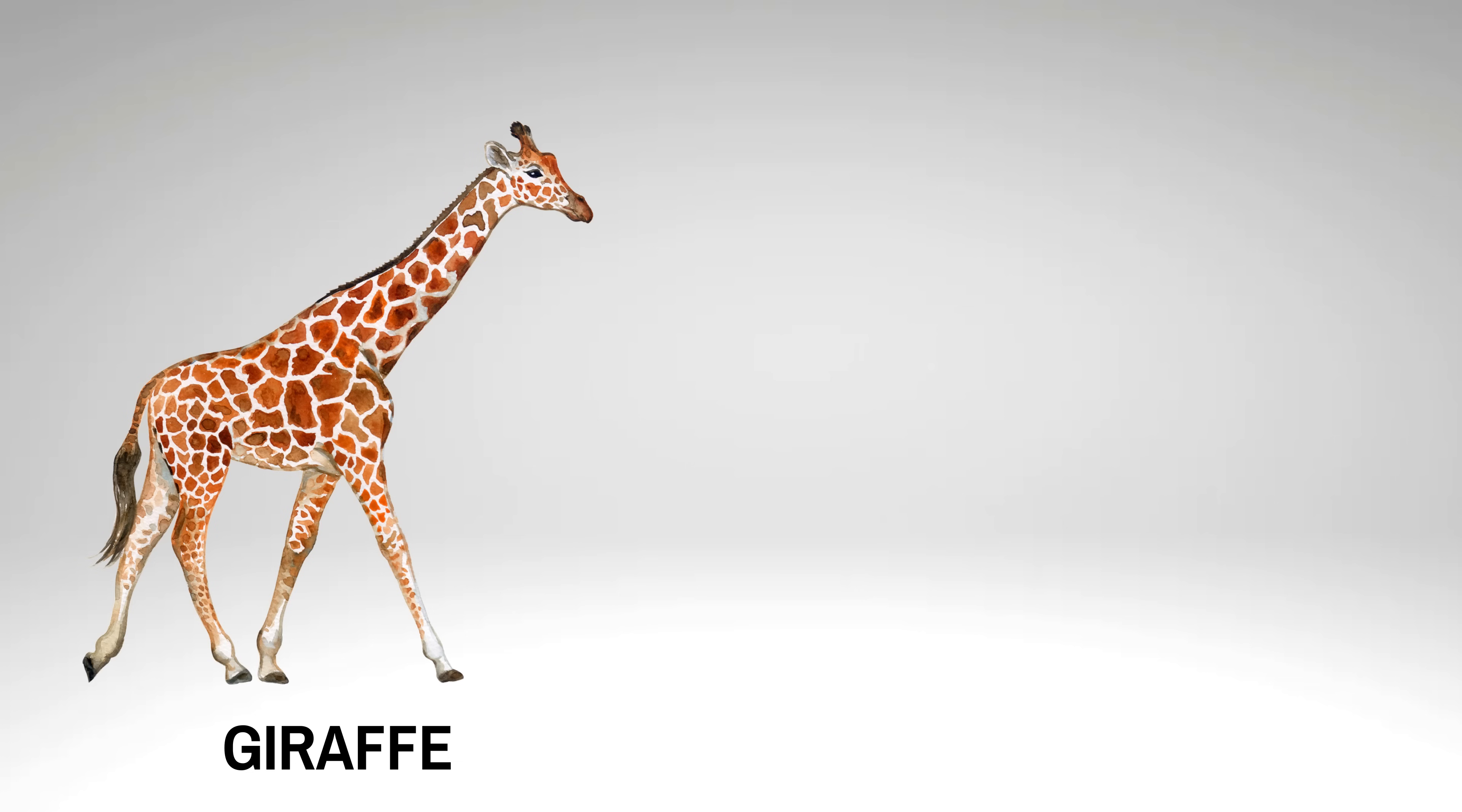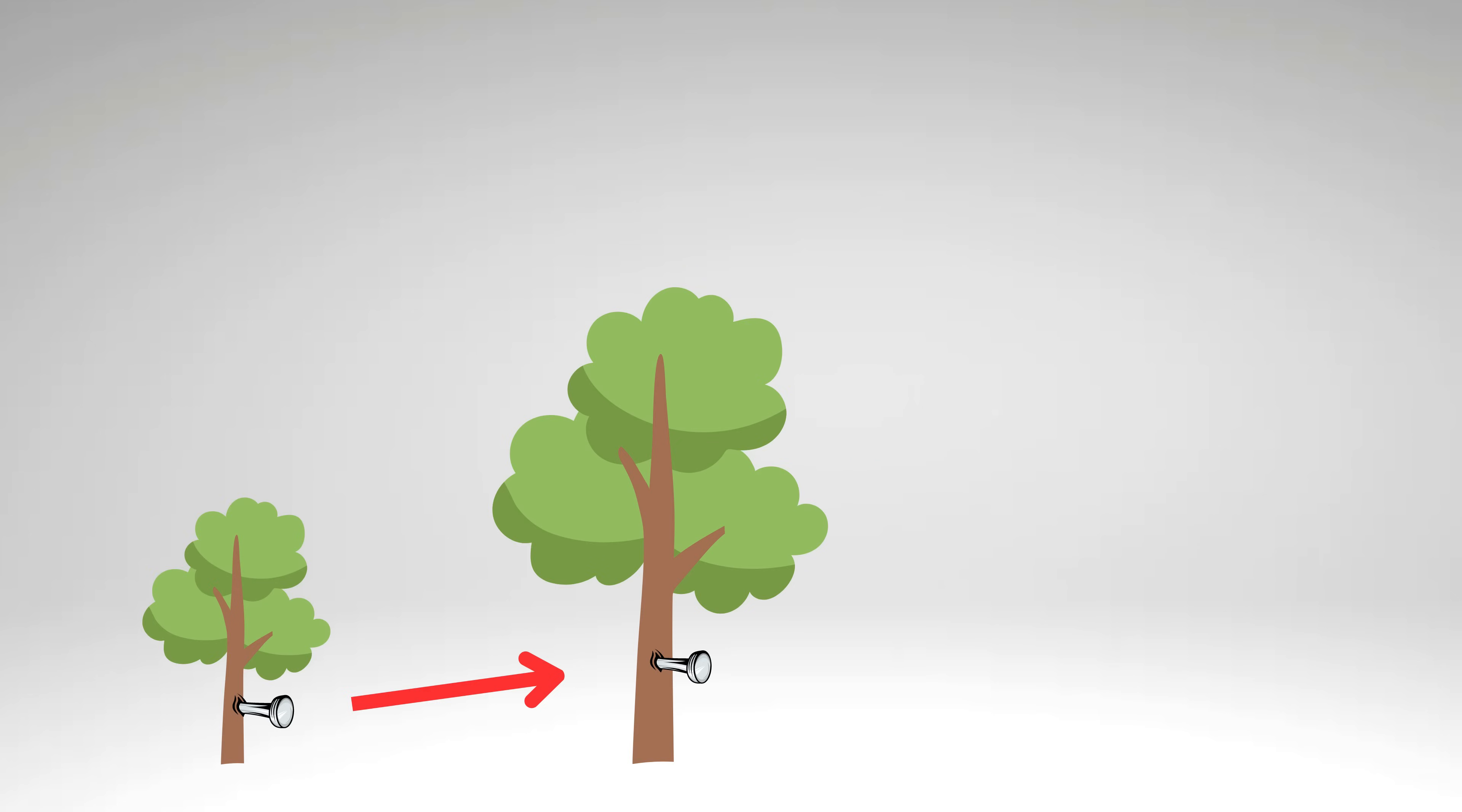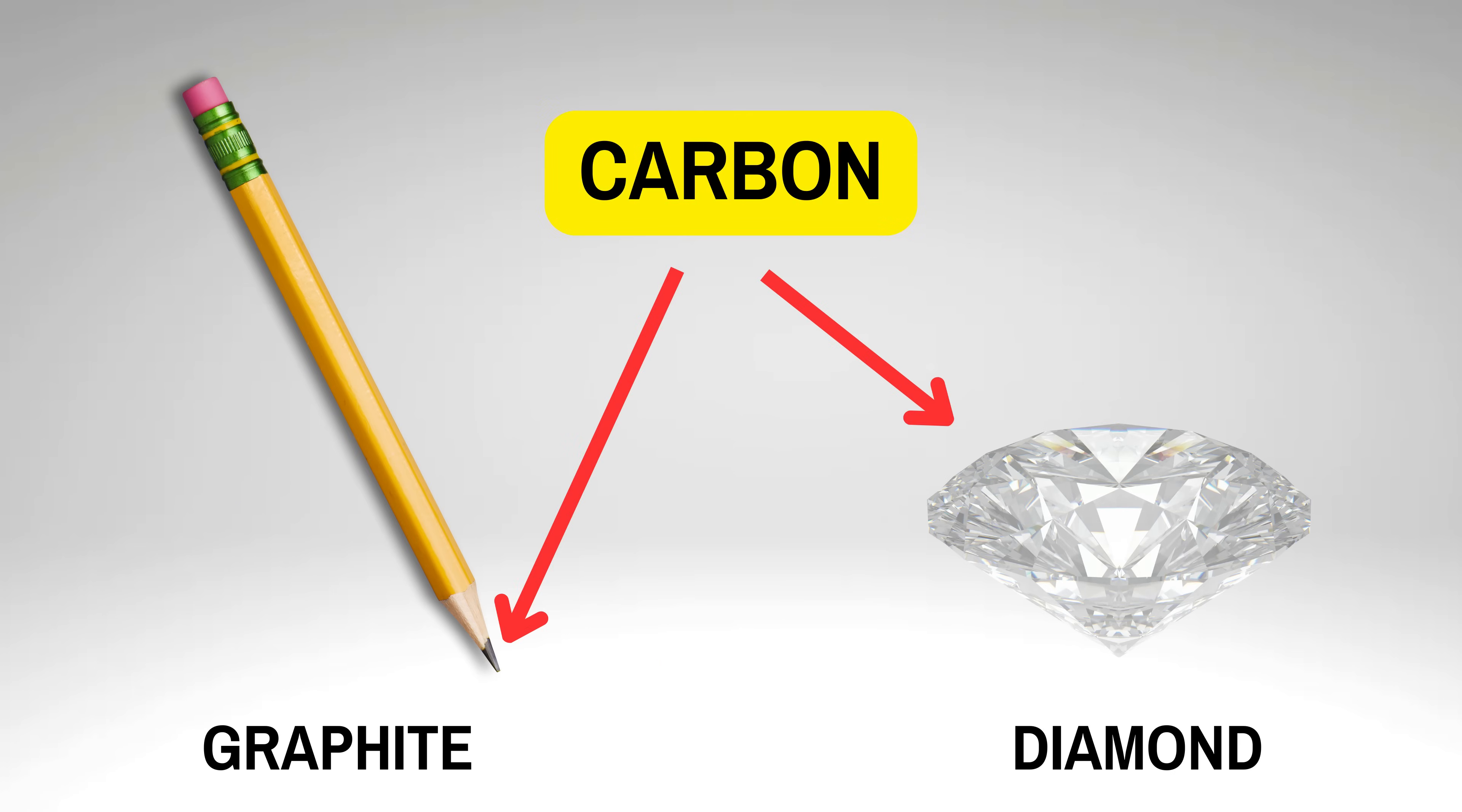Now it's time for round 2.5, a bonus round. Giraffes and humans have the same number of neck bones. A nail placed in the trunk of a tree will rise in height as the tree grows. Pencil graphite and diamonds are both made of carbon.